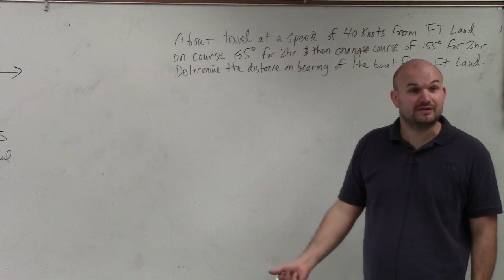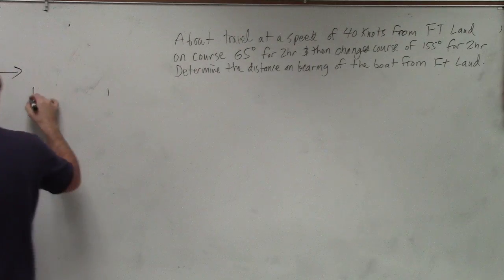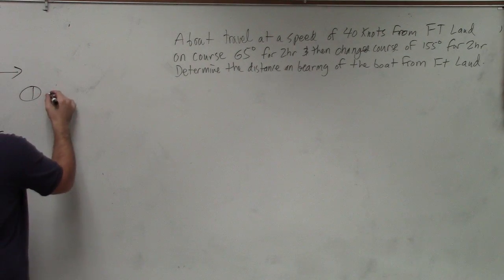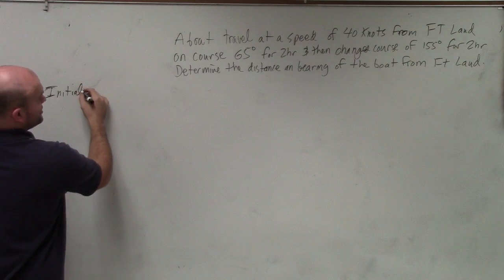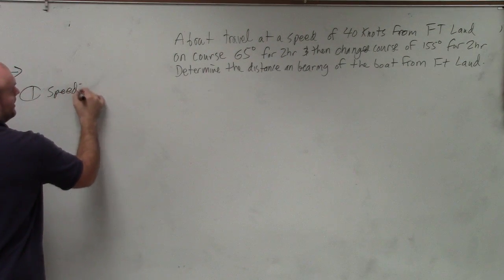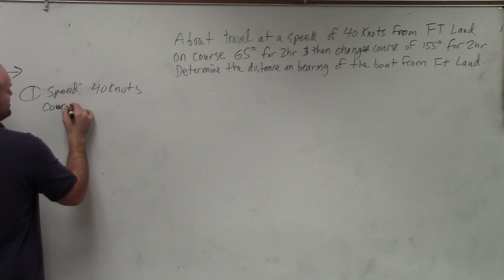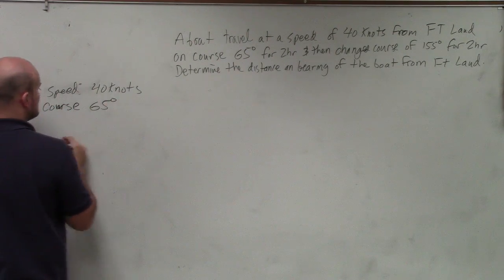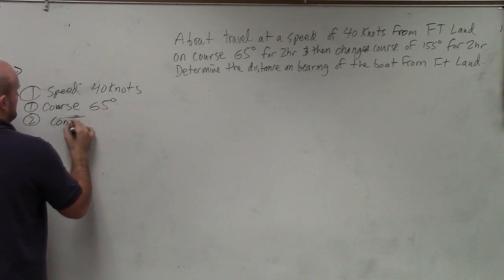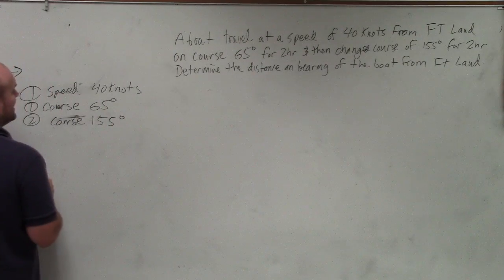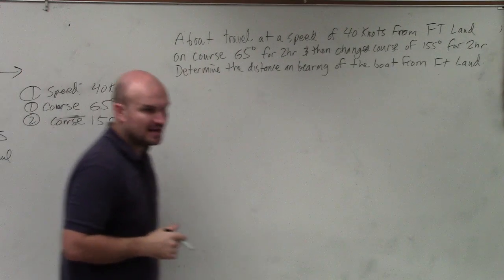The first thing is just writing down the information that is given. I already wrote this down, but we can write down the information that I would probably go ahead and write down here is that we have a boat. So we have an initial speed. Actually, we have his speed is 40 knots. We have course of direction. His first course is 65 degrees. Second course is 155 degrees. And the time for that was for two hours, and this was for four hours he was at those courses. Those are the directions he was at.